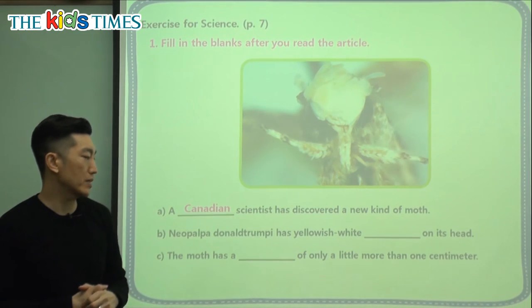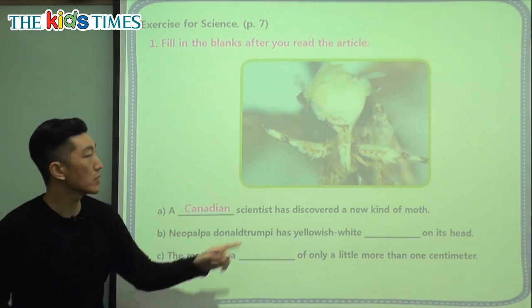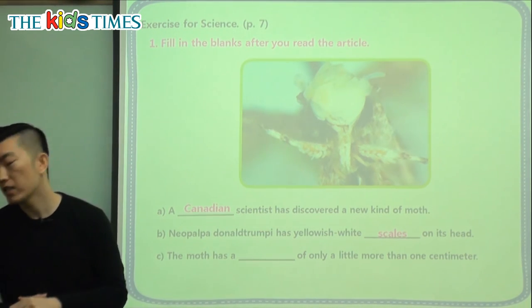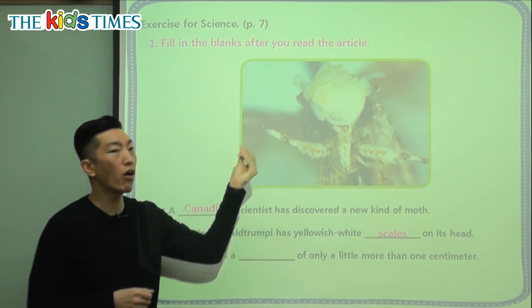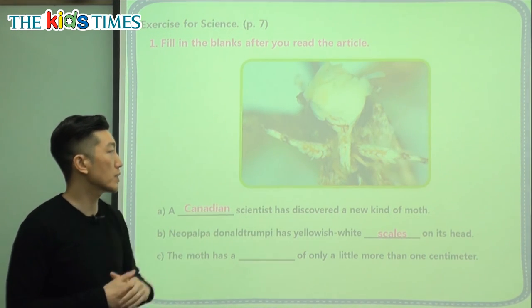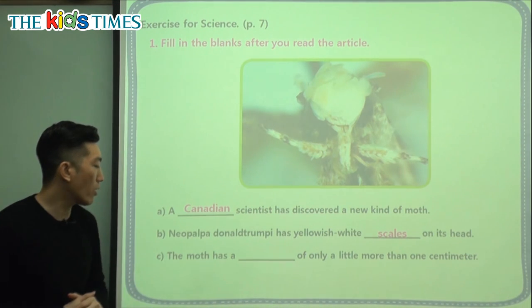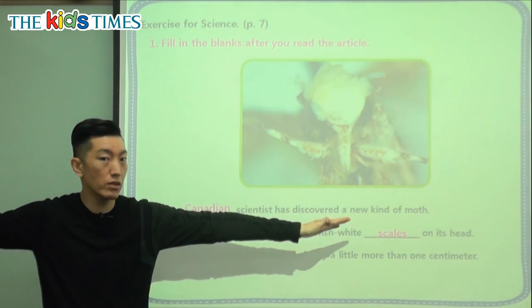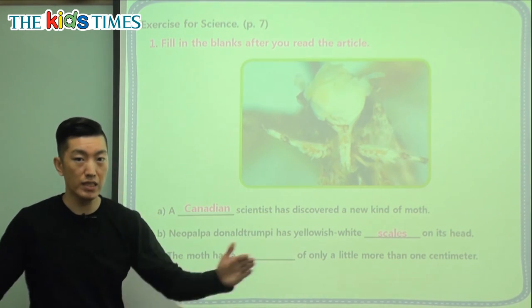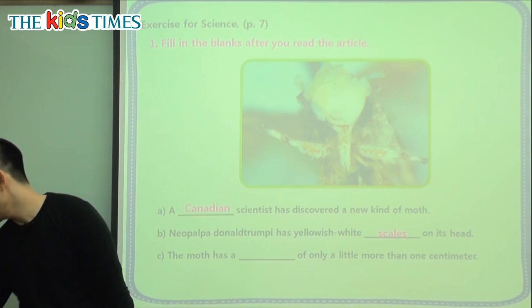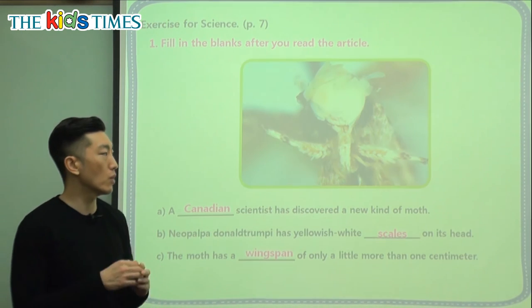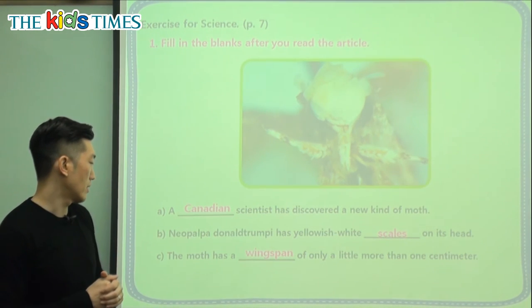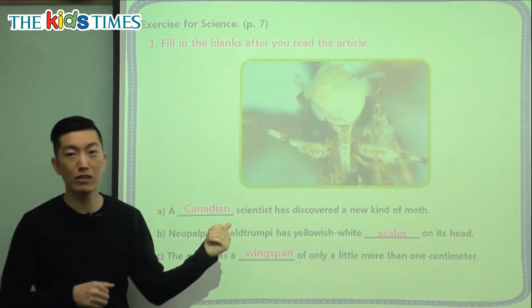Neopalpa Donaldtrumpi has yellowish white something on its head. Did we say this is hair? It's yellowish white scales — kind of like a hard plastic feeling — and that's what covers its head. And the last question: the moth has a blank of only a little more than one centimeter. If you spread out its wings and measure how wide they are, that's called a wingspan. So the moth has a wingspan of only a little more than one centimeter — a very, very small moth.